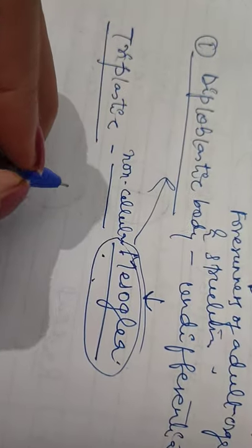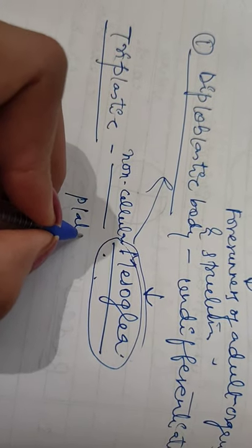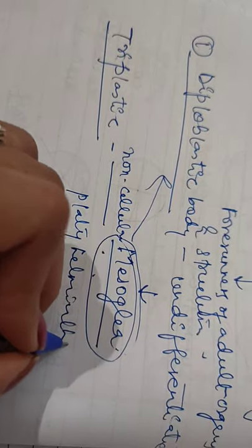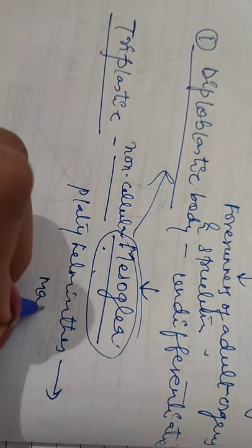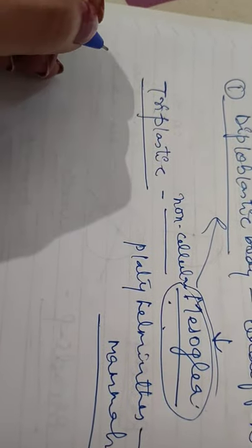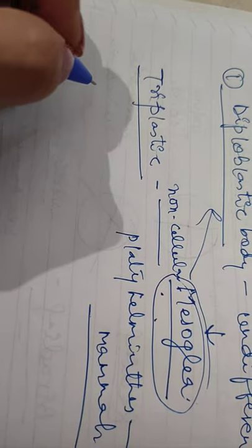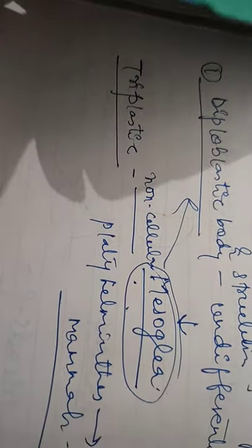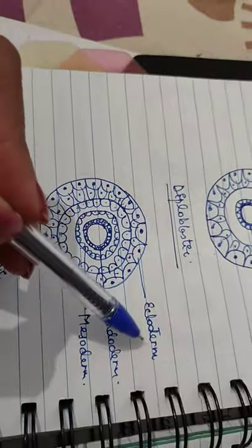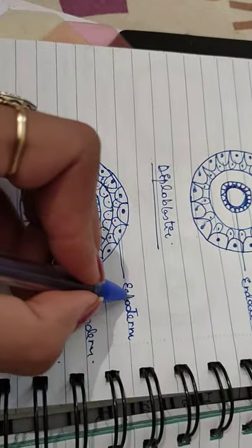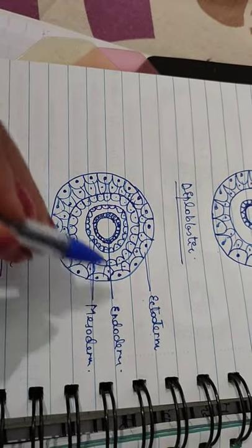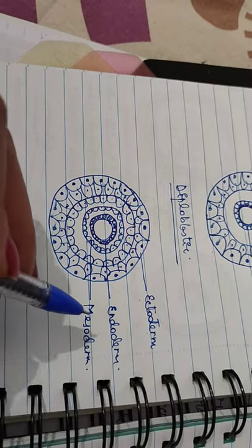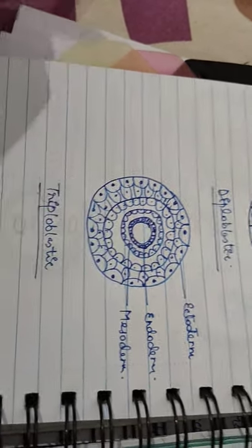Next is triploblastic body. Higher metazoans — from platyhelminthes to mammals — are all triploblastic, meaning they have three definite tissue layers. In addition to an outer epidermis derived from ectoderm and inner endodermis derived from endoderm, they have a middle tissue layer derived from mesoderm. This mesoderm makes the body parts.